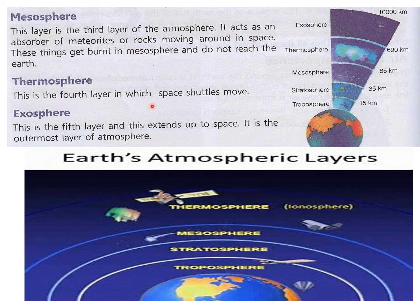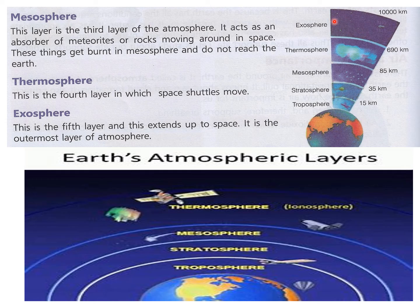The fourth layer is the thermosphere, in which space shuttles move — you can see satellites moving in the thermosphere layer. The fifth and final layer is the exosphere, which is the outermost layer of the atmosphere, extending up to space. In this layer there is very little air and it gradually extends into space.